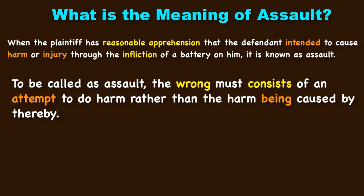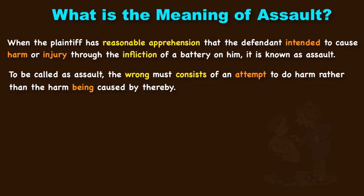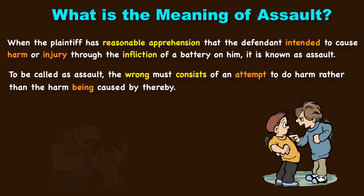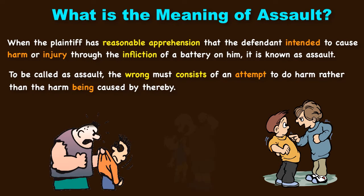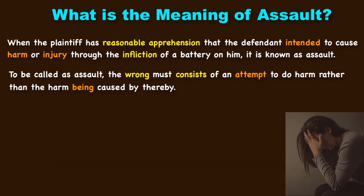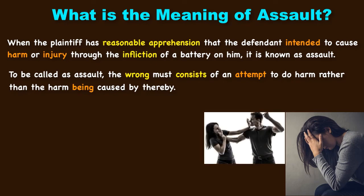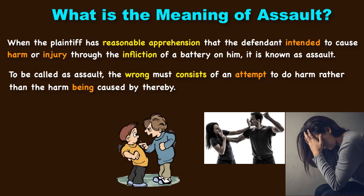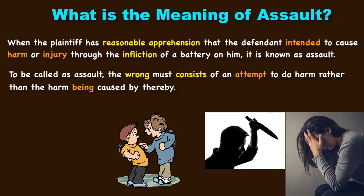To be called assault, the conduct must be intentional and offensive, causing the plaintiff to fear for his or her safety. Someone came and deliberately, intentionally targeted you, threatened you, and was about to beat or hit you. Because of such reasonable apprehension, you faced certain mental injury. Of course, he did not apply any force — the moment he applies force, it will be called battery. But at this point in time he just threatened you, perhaps showing an action suggesting he will kill you. That is assault.